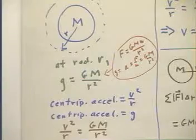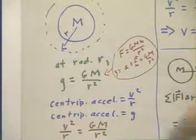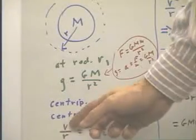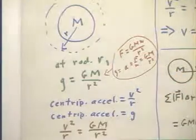By setting gravitational acceleration equal to centripetal acceleration, we obtain this equation that relates the velocity of an orbit to the radius of the orbit for a given mass, big M.